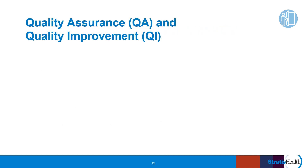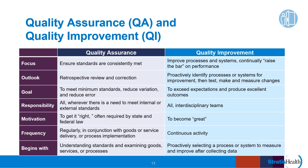Many of you may be familiar with quality assurance. It can be helpful to compare quality assurance and quality improvement, as shown in this table. Both are essential to healthcare and healthcare organizations, and they are complementary — you might think of them as two sides of the same coin. Essentially, quality assurance is about consistently meeting standards, and quality improvement is about continually raising the bar.